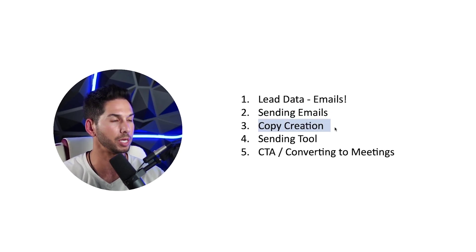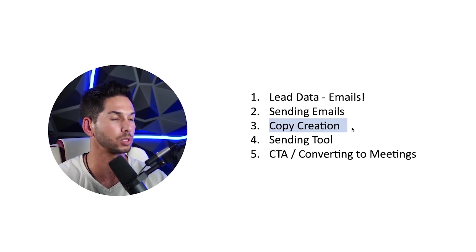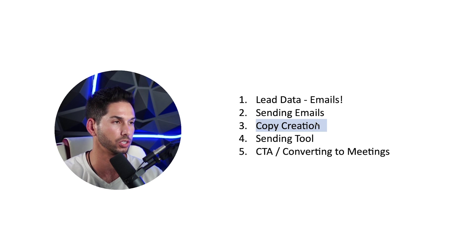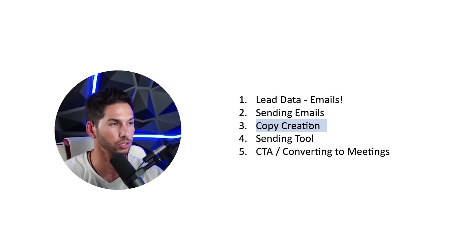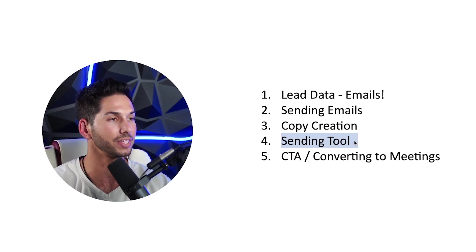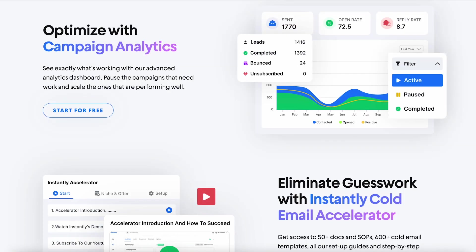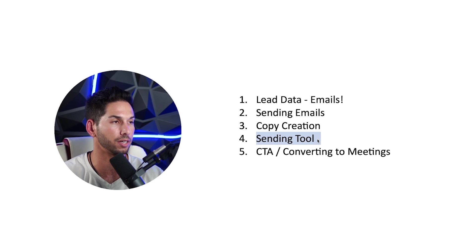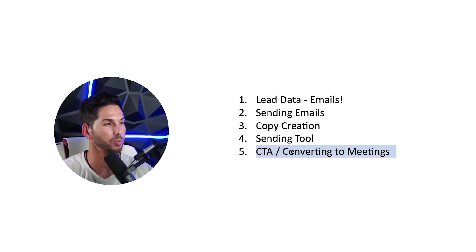The next thing — and this is where people get it wrong, this is where this video is going to save your life and make you so much money — is the copy and offer creation. I'm about to show you my template that you can pretty much copy and paste into whatever industry and offer you use. The copy creation is very important, and we'll be going over that in just a second. The next thing you're going to need is a good sending tool — Instantly.ai is the best in class, and it's very easy to scale. Last but not least, you want to make sure that leads are actually converting to calls.